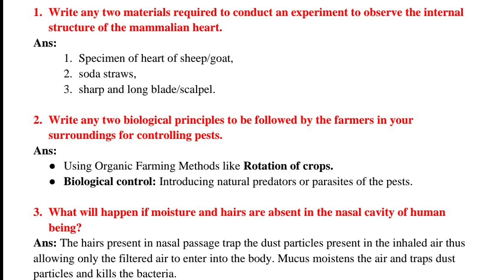Question number 2: Write any two biological principles to be followed by farmers for controlling pests. Answer: 1. Using organic farming methods like rotation of crops. 2. Biological control — introducing natural predators or parasites of the pests.